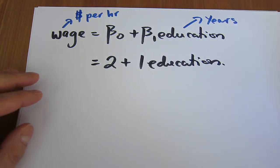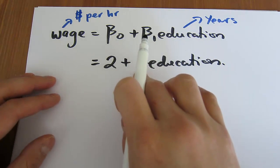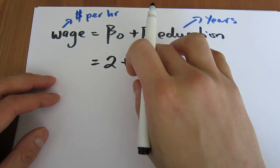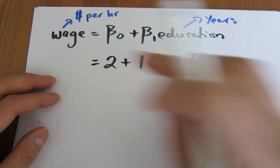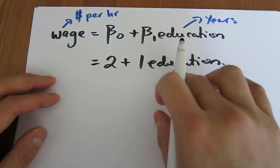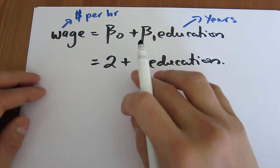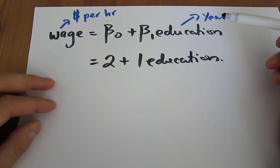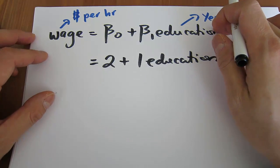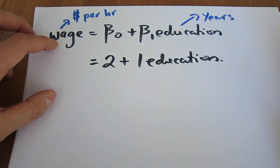The way we interpret it is really easy. Beta1, which in this case was estimated to be 1, tells you that a 1 unit increase in education will lead to a beta1 unit increase in wage. So what this means is that if you have one more year of education, your wage is expected to increase by $1 per hour. The key is knowing the units of education and wages, and knowing that a 1 unit increase in x leads to a beta1 unit increase in y.